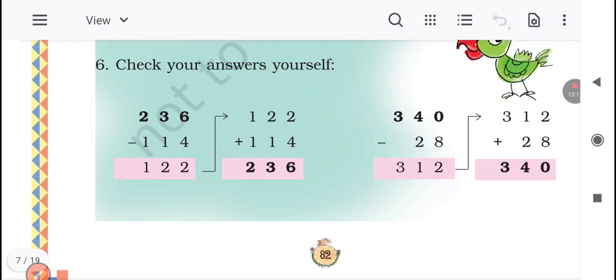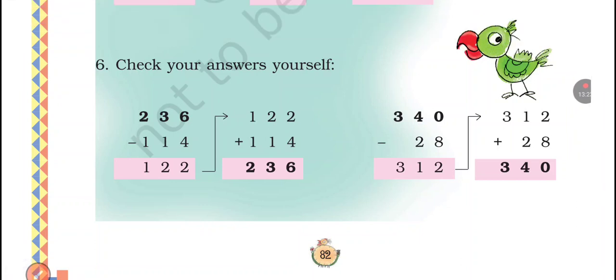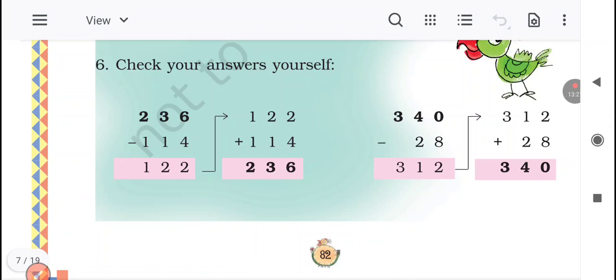340 minus 28. So here when you subtract, you will find the answer 312. And 312, if you add 28, you will get 340. Yes. Very good. So everyone is now able to check their answers also. You can check your answers. Good.